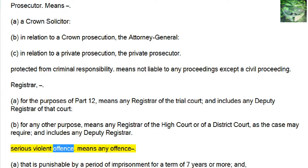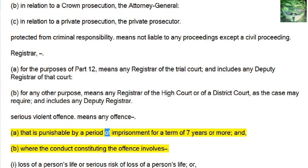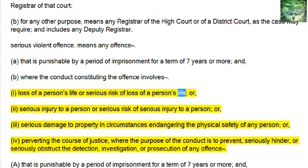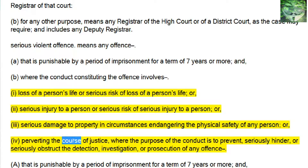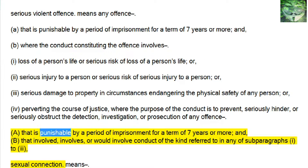Serious Violent Offense means any offense: a, that is punishable by a period of imprisonment for a term of seven years or more, and b, where the conduct constituting the offense involves: 1, loss of a person's life or serious risk of loss of a person's life; or 2, serious injury to a person or serious risk of serious injury to a person; or 3, serious damage to property in circumstances endangering the physical safety of any person; or 4, perverting the course of justice, where the purpose of the conduct is to prevent, seriously hinder, or seriously obstruct the detection, investigation, or prosecution of any offense that is punishable by seven years or more and that involves conduct of the kind referred to in subparagraphs 1, 2, or 3.